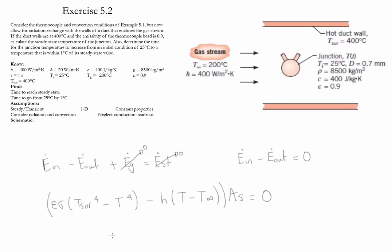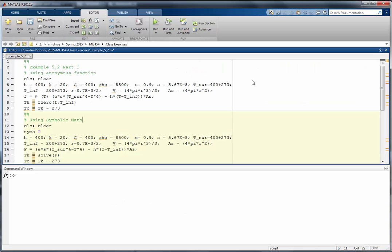Now we need to determine the value of this temperature. Notice that this temperature has a fourth degree term from radiation and a first degree term from convection. To solve it by hand is very difficult, so we're going to solve it using MATLAB. This type of problem can be solved numerically in MATLAB using two different methods: the first method is to use anonymous functions and fzero, and the second method is to use symbolic math and solve.